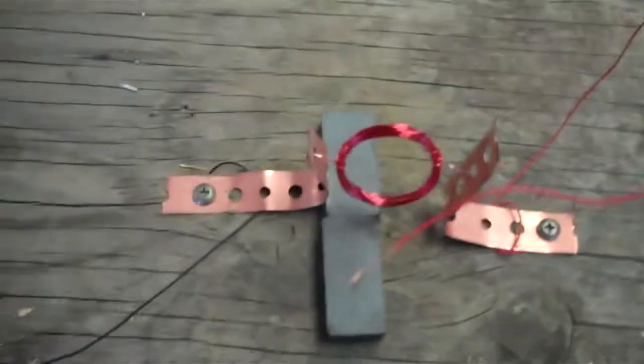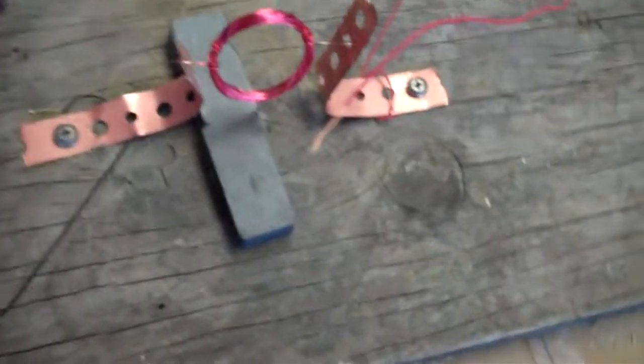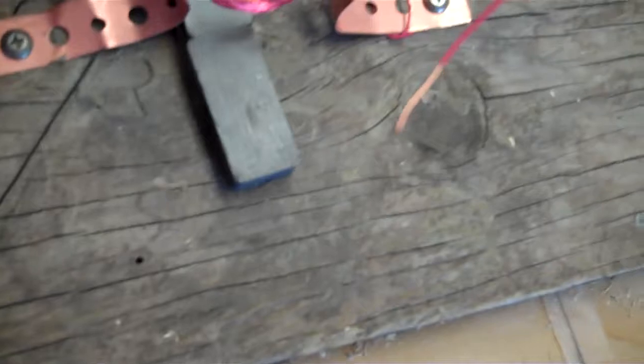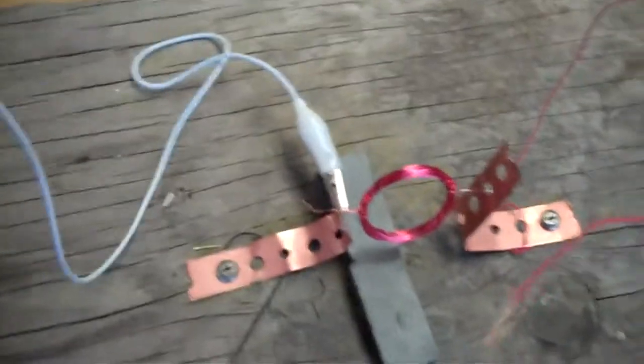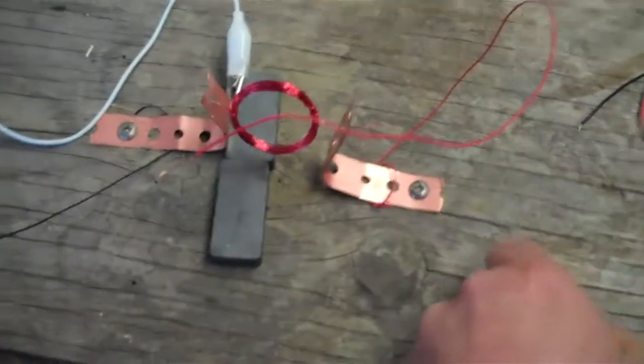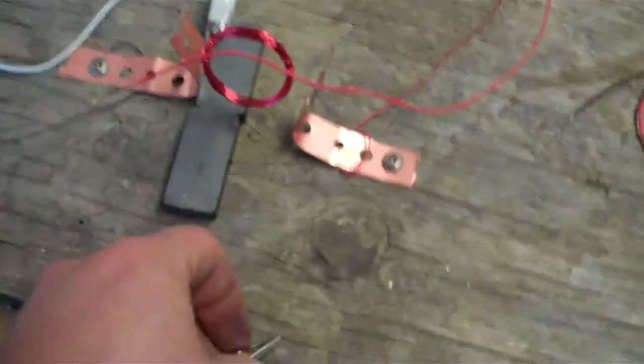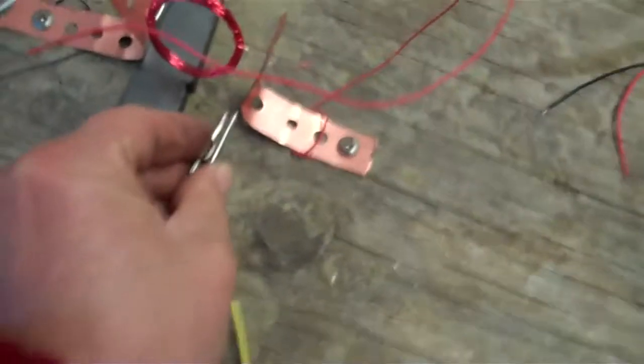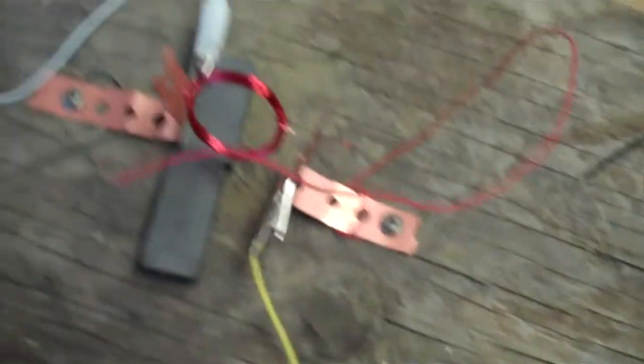And then I'm going to take this, which is going to be negative. We'll call white negative, and this is going to be positive. We happen to have yellow; that'll be positive.